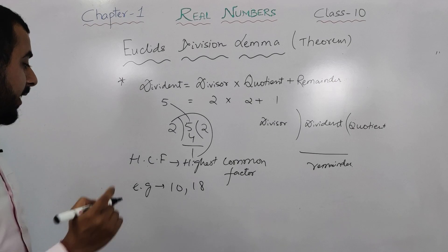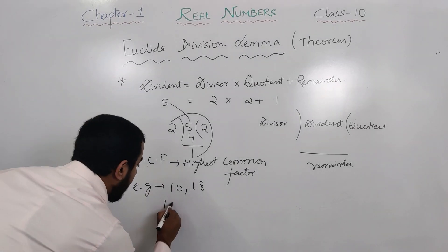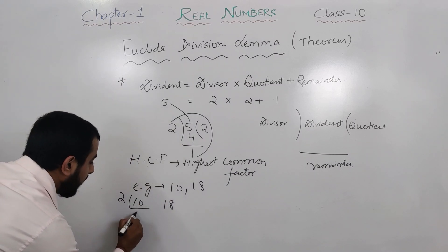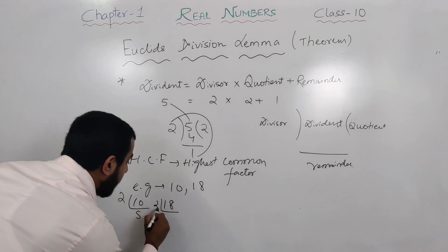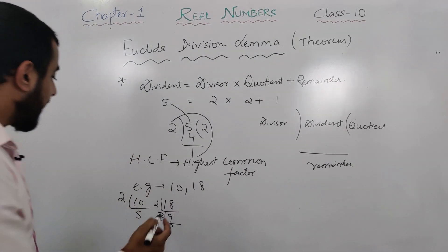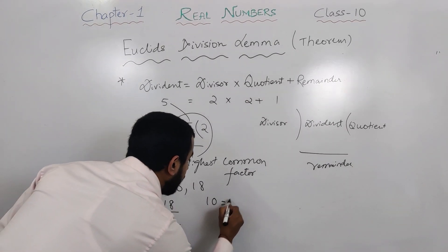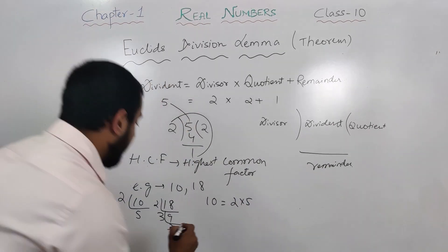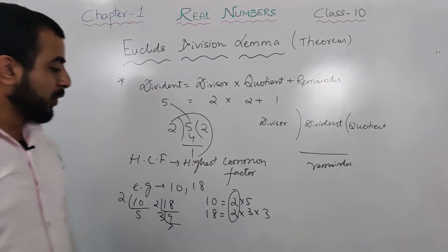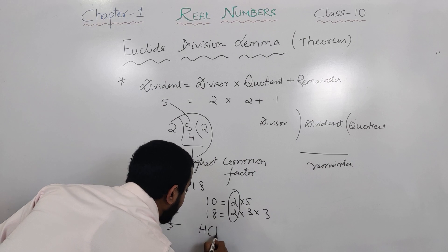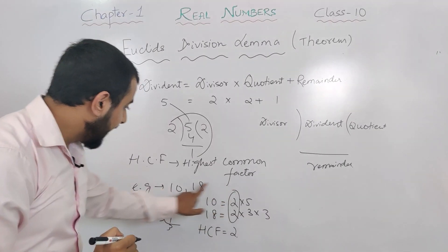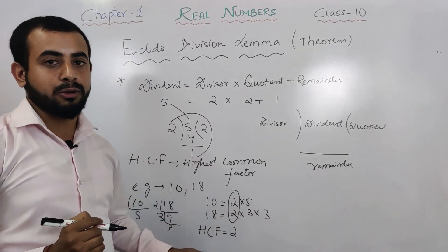The example is the numbers 10 and 18. We have to find the HCF of 10 and 18 by taking their factors. 10 equals 2 into 5, and 18 equals 2 into 3 into 3. The common factor is 2, so HCF is equal to 2. This method is the prime factorization method.